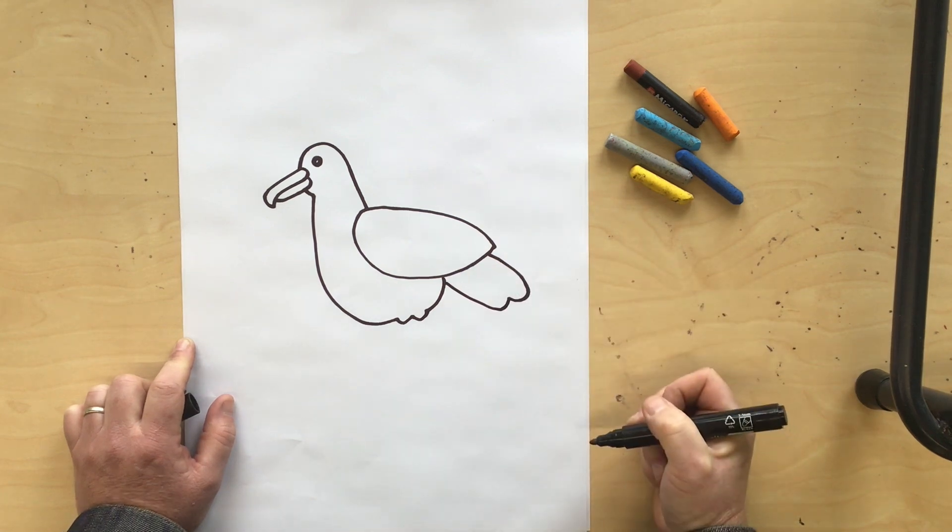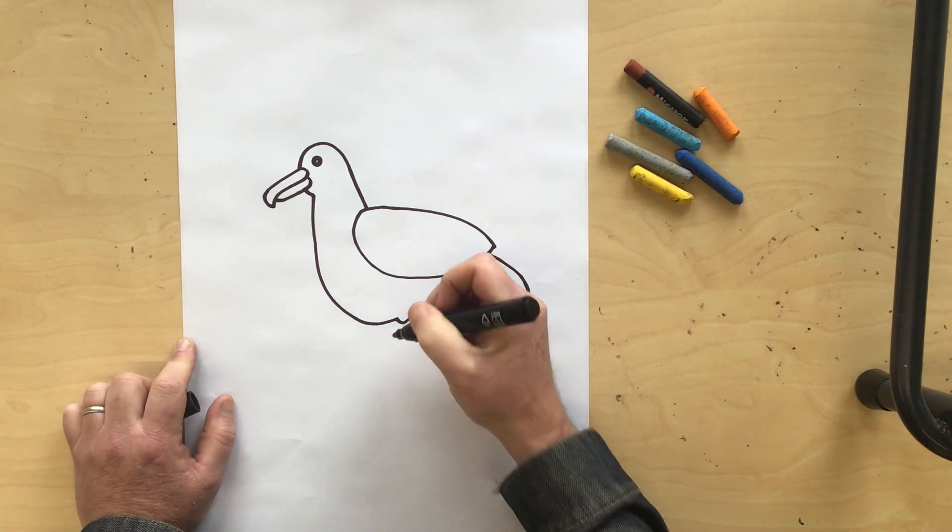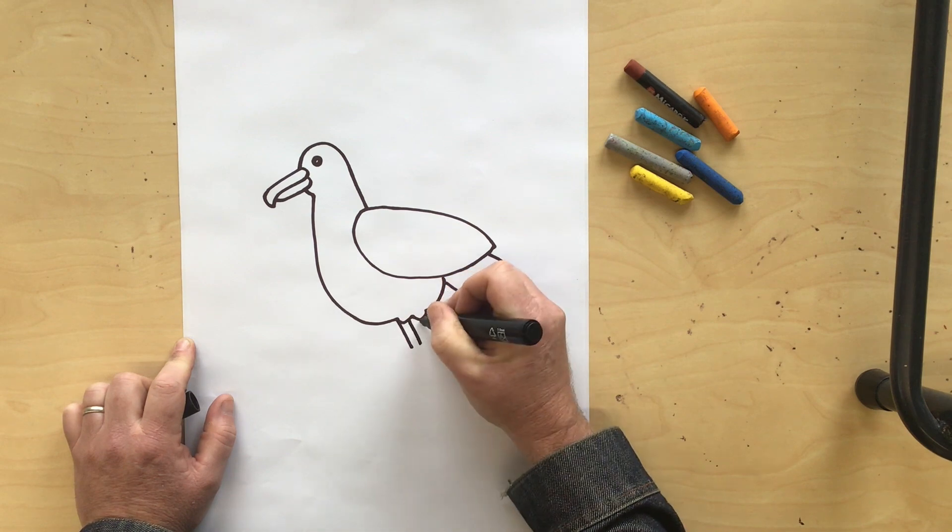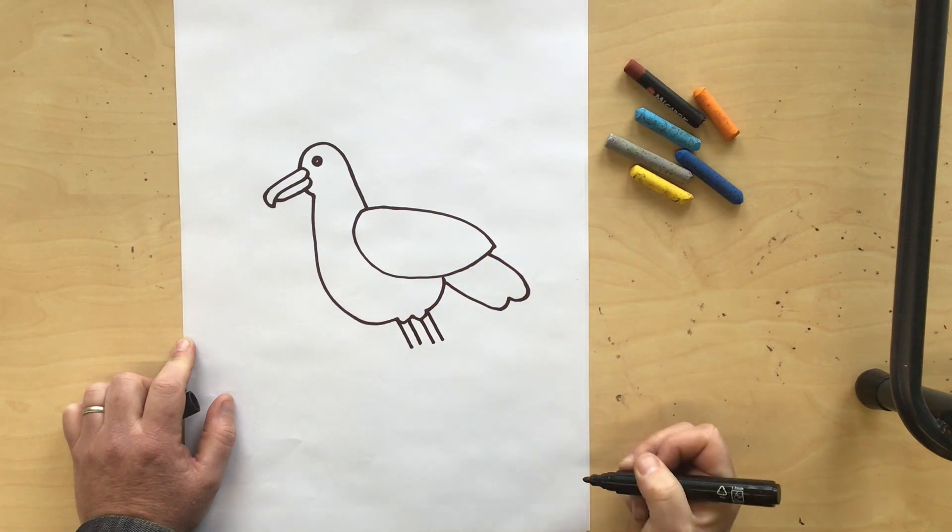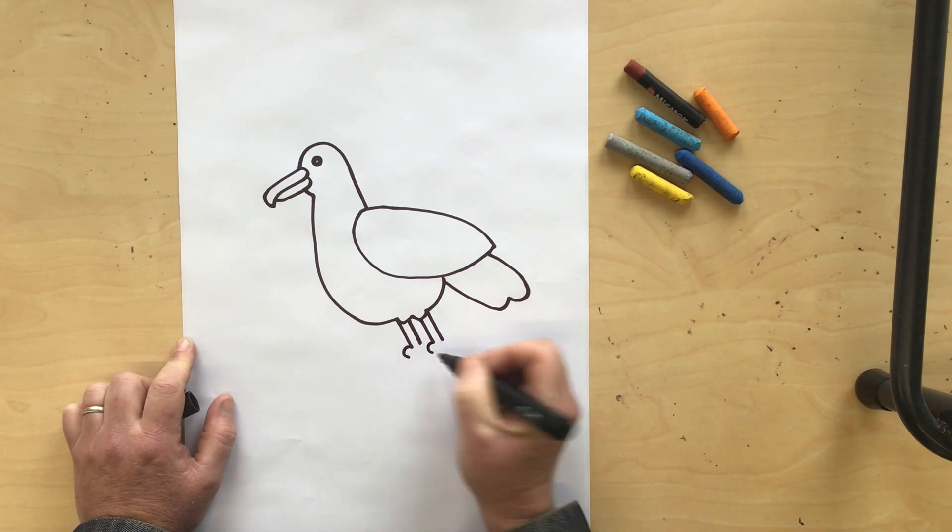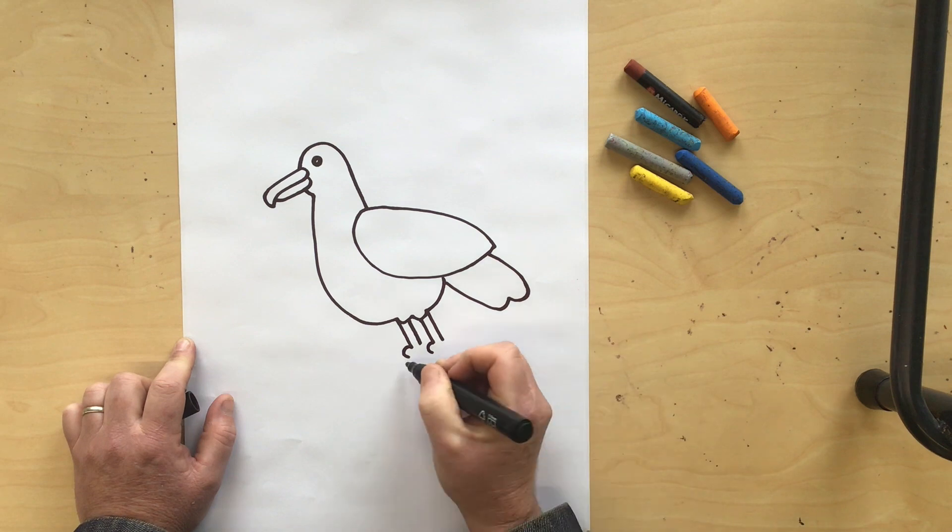And we better put some legs on, just do maybe four lines that come out like this from the little bumps. Let's put a little bump on the front of that line and bring some lines down like this to make the legs.